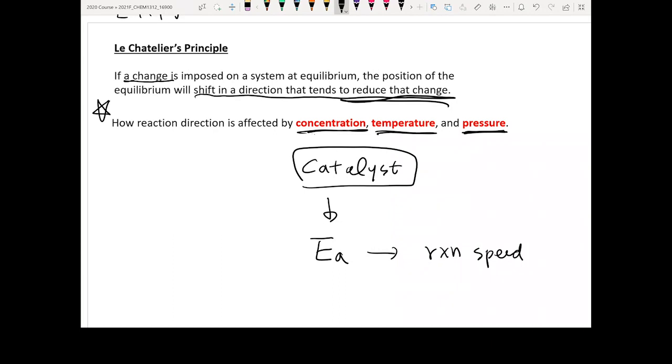If I give you a question, which of the following affects the equilibrium? And I give you A concentration, B temperature, C pressure, or D catalyst. The answer should be A, B, and C. You cannot select the D.